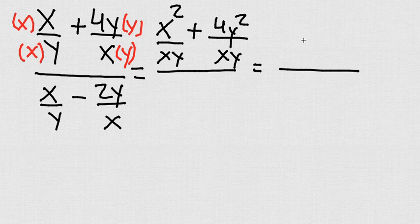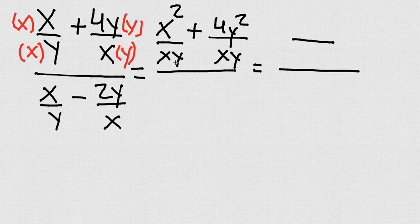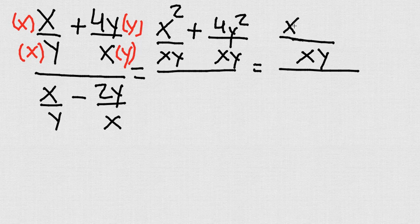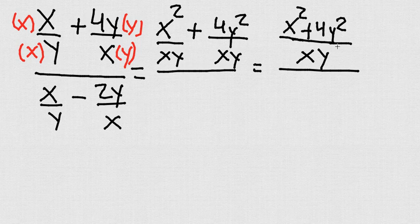Look what's happening. Now, my denominator is the same. When you add fractions and you have the same denominator, you just keep the denominator and then you just add the top. Well, I have x squared plus 4y squared. There's nothing else I can do. I'm going to go ahead and do the bottom.